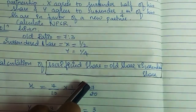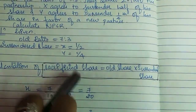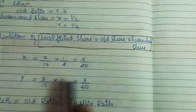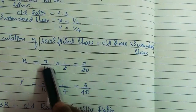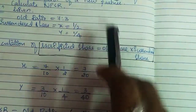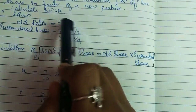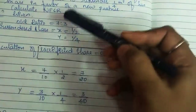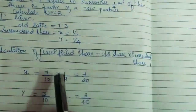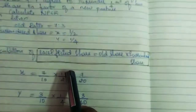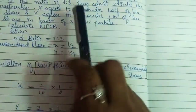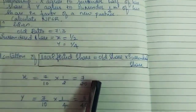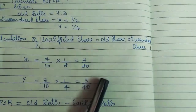Calculation of sacrificed share. We calculate sacrificed share as old ratio multiplied by surrender share. For X: old ratio is 7/10 (since 7+3=10), multiplied by surrender share of 1/2. So X's sacrificed share = 7/10 × 1/2 = 7/20.